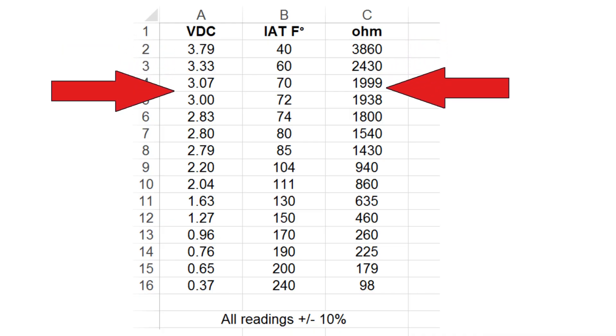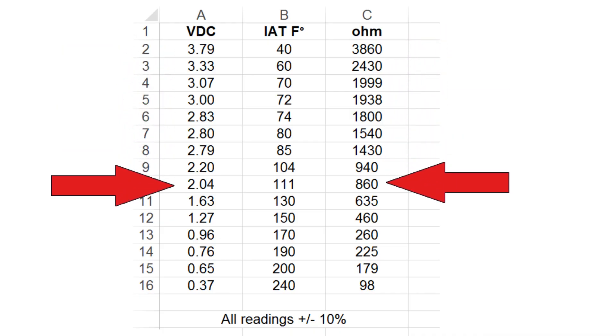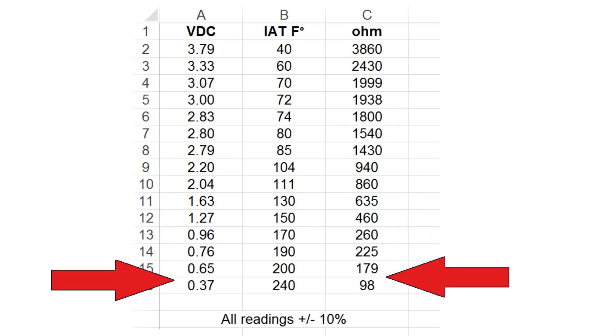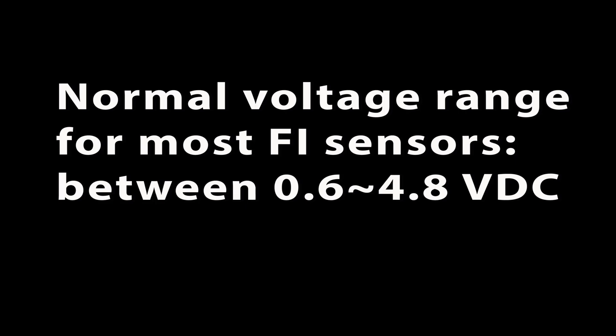The intake air temperature sensor is a variable resistor that changes its resistance, and therefore the voltage on the signal wire based on the temperature. Similar to the MAP sensor, the normal range of voltage is between 0.6 and 4.8 volts DC.